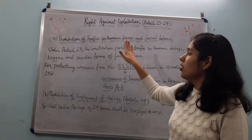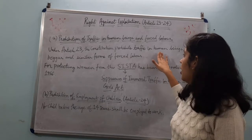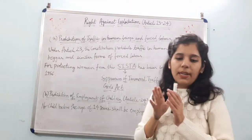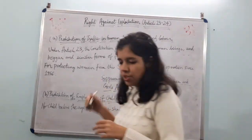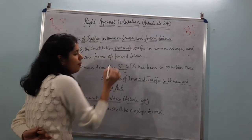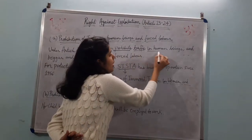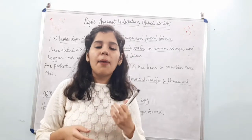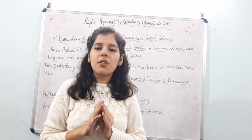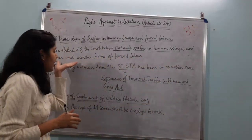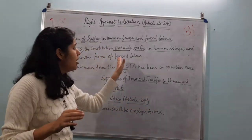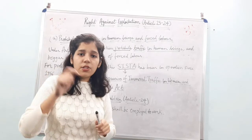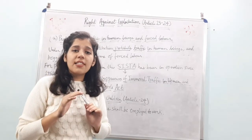Under Article 23, the Constitution prohibits traffic in human beings, beggar, and similar forms of forced labor. This means the Constitution prohibits you from buying or selling any man or woman, and also prohibits forced labor where someone is made to work without being paid anything. That is against the law.